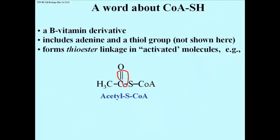A word about Coenzyme A, which has a sulfhydryl group, so we often just call it Coenzyme A-SH or CoA-SH. First of all, it's a B vitamin derivative. In its structure, it has an adenine and the SH or thiol group. The full structure is not shown here.